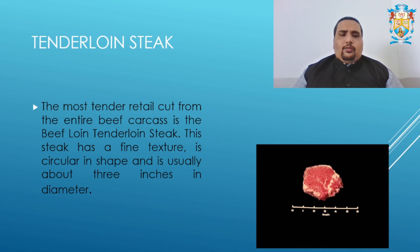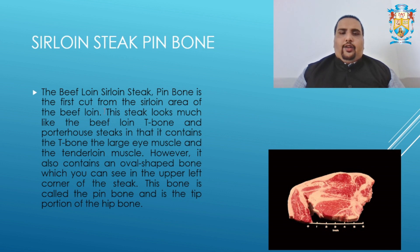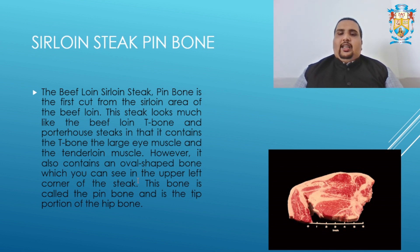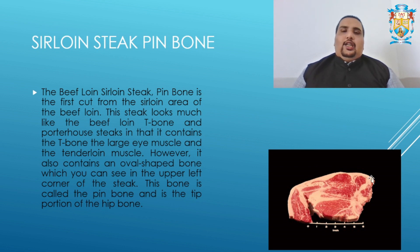Next is the sirloin steak. The beef loin sirloin steak pin bone is the first cut from the sirloin area. It looks much like the T-bone and porterhouse steak, containing the T-bone shape, large eye muscle, and tenderloin muscle. However, it also contains an oval-shaped bone in the upper left corner called the pin bone, which is the tip portion of the hip bone.